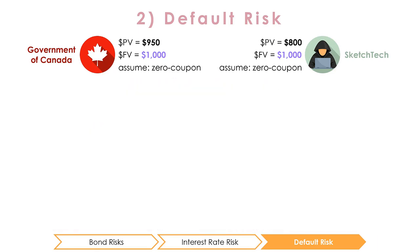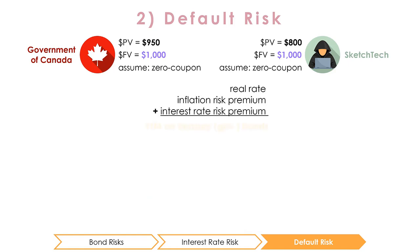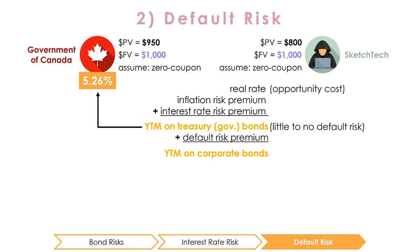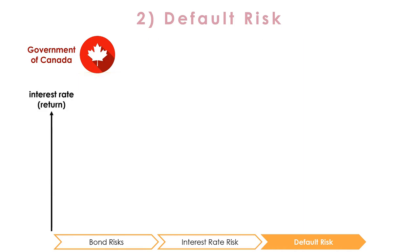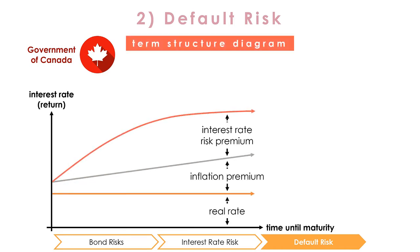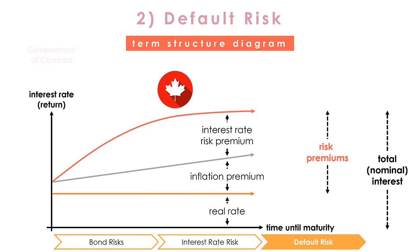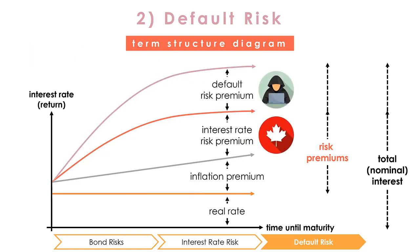Recall that we can compute our yield to maturity using this formula: the real rate plus inflation risk premium plus interest rate risk premium equals the YTM on a treasury bond; adding the default risk premium equals the YTM on a corporate bond. The difference between the yield to maturity on a risky bond and a comparable risk-free bond is called the default premium. Note that while treasury bills have zero default risk, they still yield a return, because investors must still be compensated for their opportunity cost and inflation, and they are also exposed to some level of interest rate risk. We can plot the yields of default-free government bonds of different maturities on a term structure diagram. Interest rate risk, and therefore the risk premium, increases as the time to maturity increases. For bonds that involve default risk, we can add an additional return to this graph in the form of a default risk premium.